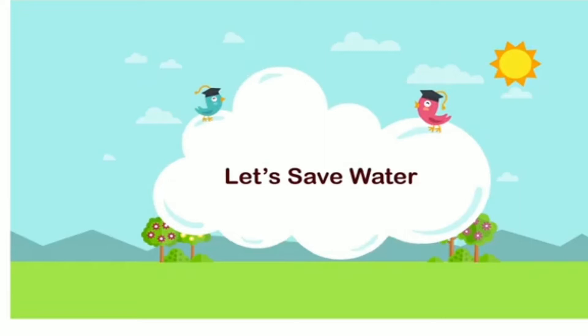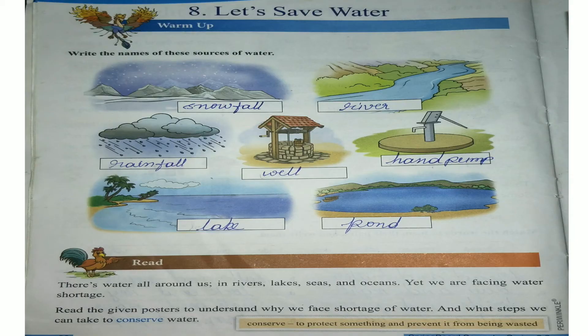Dear children, complete this activity. This activity is there in your English textbook page number 26. Write the names of these sources of water: snowfall, river, rainfall, well, hand pump, lake, pond.